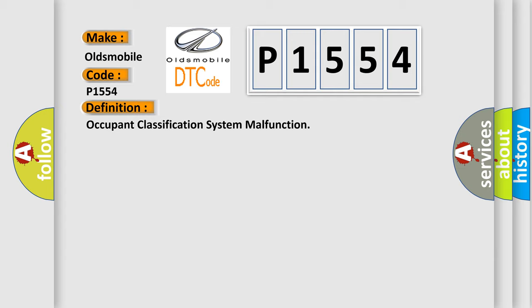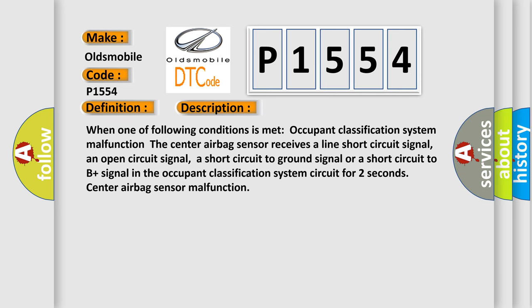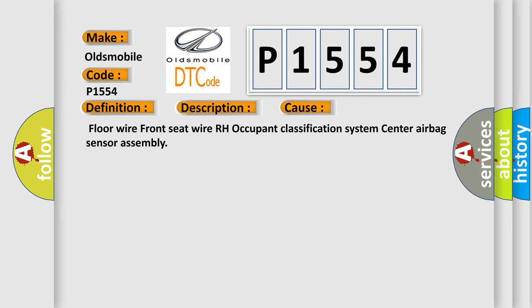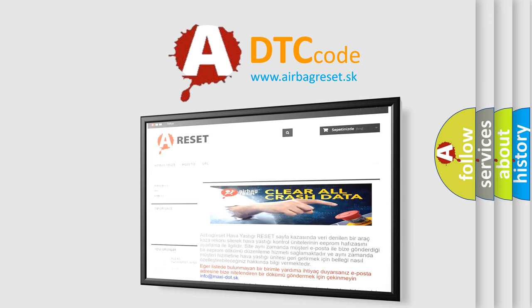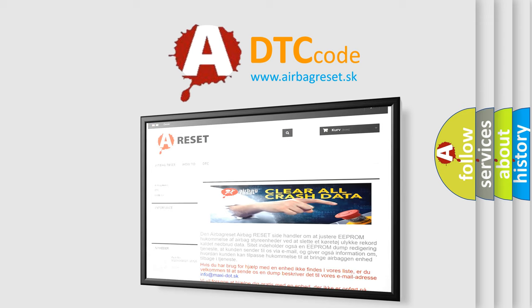The basic definition is: Occupant Classification System Malfunction. Here is a short description of this DTC code. When one of the following conditions is met — the center airbag sensor receives a line short circuit signal, an open circuit signal, a short circuit to ground signal, or a short circuit to B-plus signal in the occupant classification system circuit for two seconds — a center airbag sensor malfunction is indicated. This diagnostic error occurs most often in these components: floor wire, front seat wire RH, occupant classification system, or center airbag sensor assembly. The airbagreset.sk website aims to provide information in 52 languages. Thank you for your attention and stay tuned for the next video. Bye-bye.